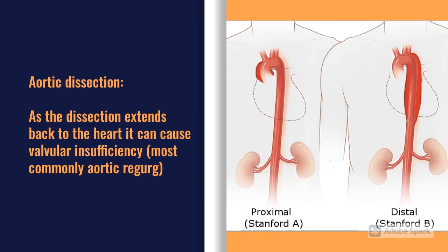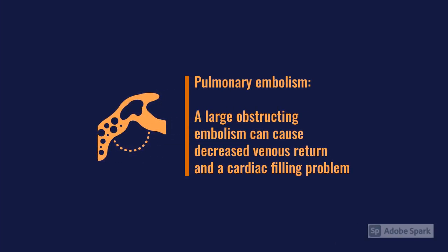Aortic dissection is another acute presentation, so we have to be thinking of those big cardiovascular presentations in the setting of heart failure and not classify heart failure by itself before we rule those out. A pulmonary embolism causing circulatory collapse, particularly those with an obstructive shock nature, can put you into heart failure, but we'll want to treat the underlying cause of the pulmonary embolism.